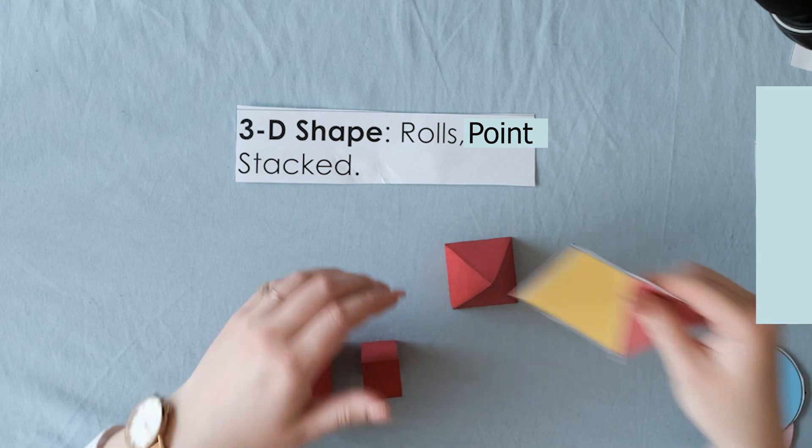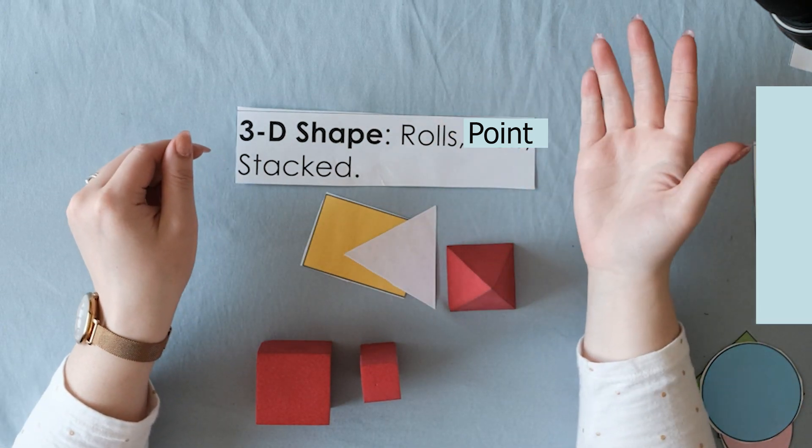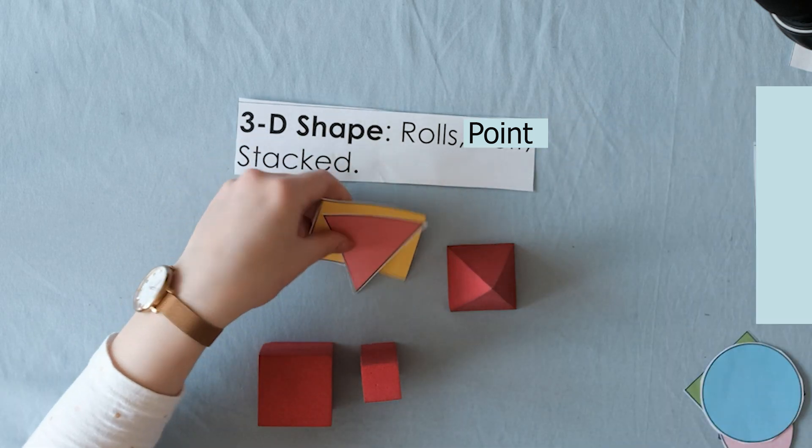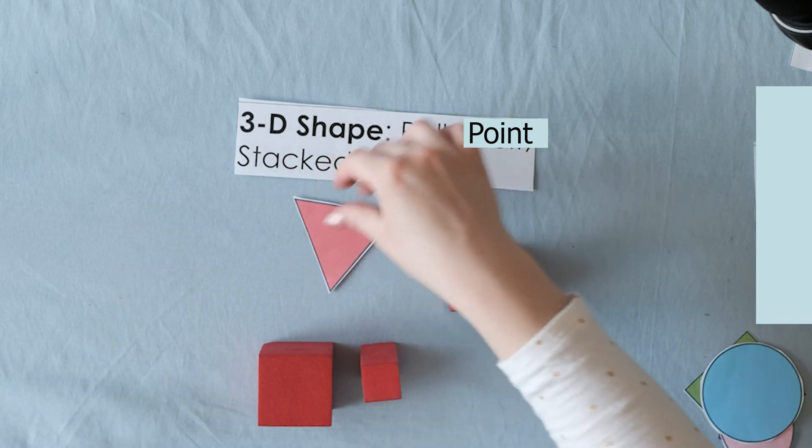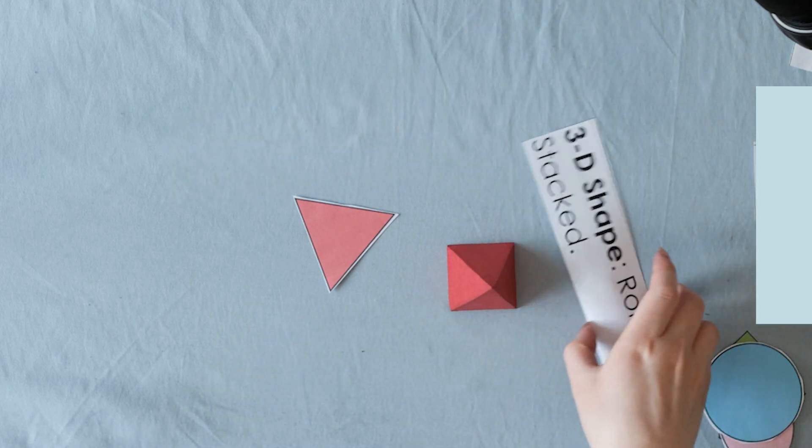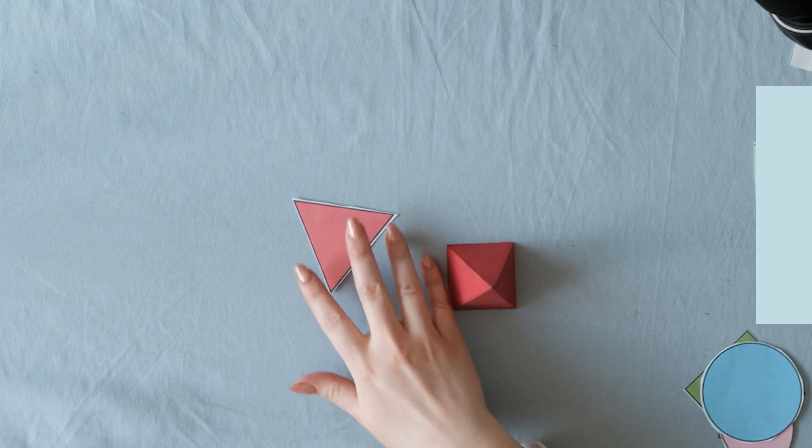The 2-D shapes, they're not really the same, right? I mean I could stack them but they just fall over and they don't really roll or anything. So that's the difference. So let's look at them again. So this is a 3-D shape. 3-D and 2-D. Do you notice the difference?